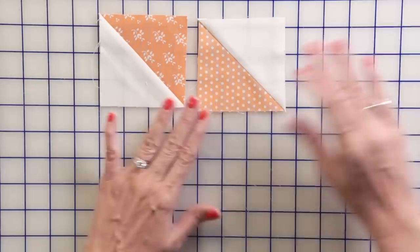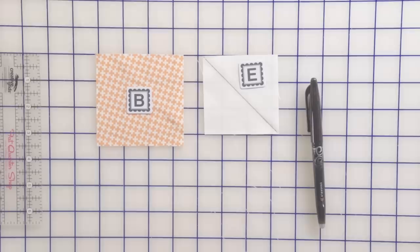Then you're going to press towards your dark fabric. For each block, you're going to need four half square triangles.